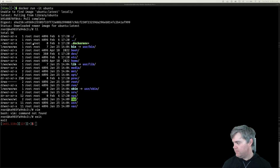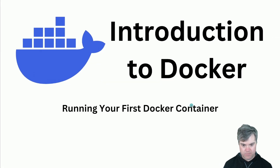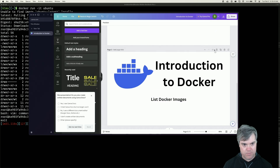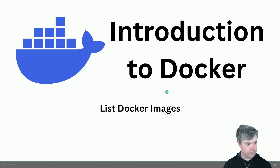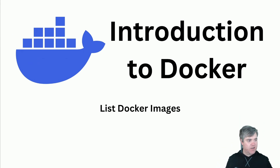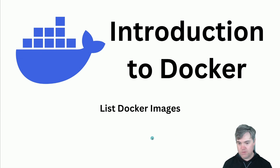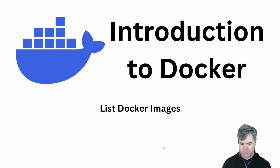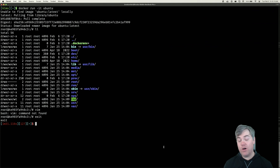List Docker images. Now that we have run our first Docker container, let's go ahead and take a look at the image that we used. We can do this with the command docker images. We did this initially when we first installed Docker and we had no images whatsoever to look at, but now we have one image — this Ubuntu image. We can see we have some information here. Now before we had these titles but no images to look at, but now we have some context for it.